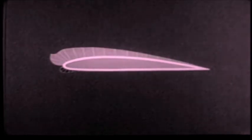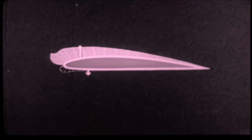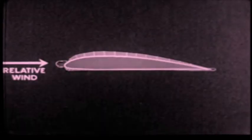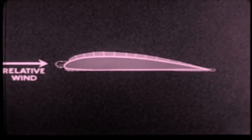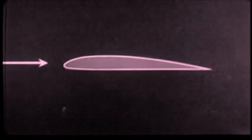An airfoil at rest in still air is at atmospheric pressure over its entire surface. It has been shown that airfoils derive their lift from the pressure differences acting upon their surfaces. The negative pressure difference upon the upper surface at normal angles of attack being the major component of the lift force. Now let us see what happens to pressure values and distribution at negative angles of attack.